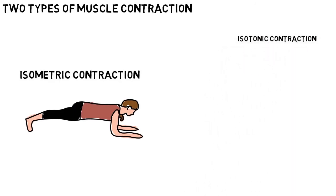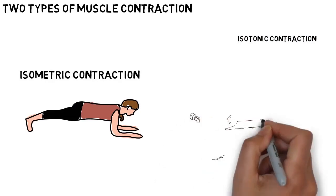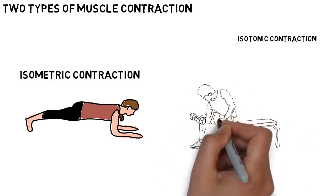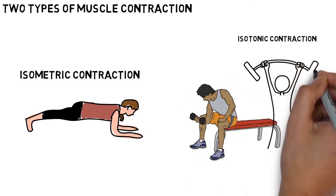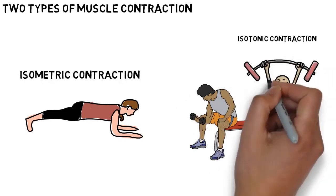Isotonic contraction. The muscle will change length and contract in order to pull a joint, and in turn something will move. For example, when doing bicep curls, lifting the weight and changing the muscle length.